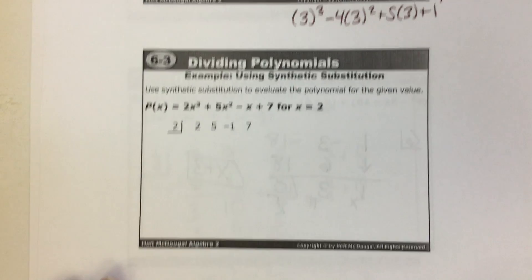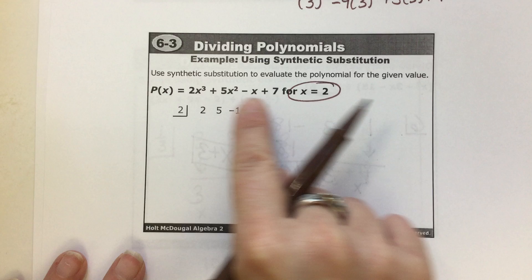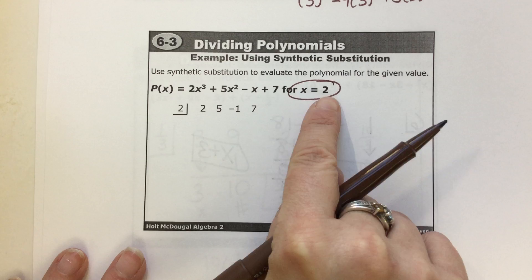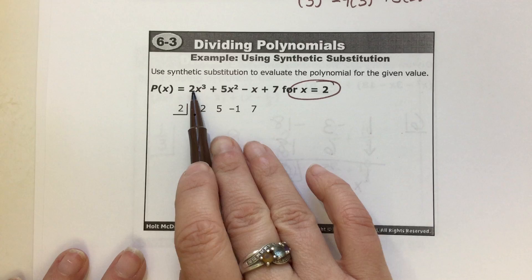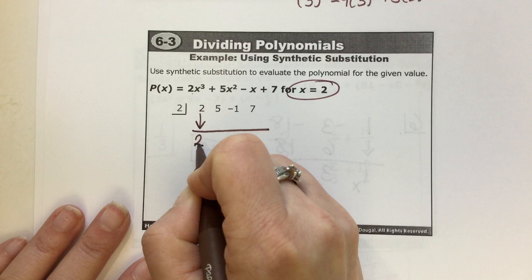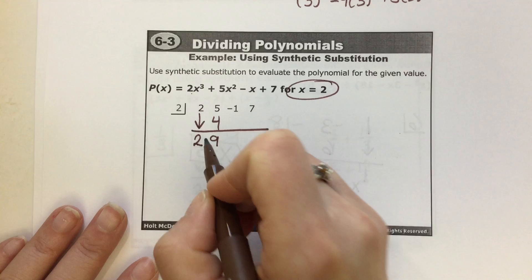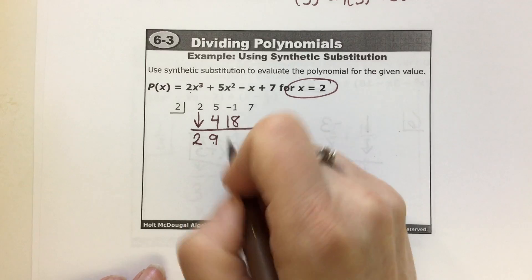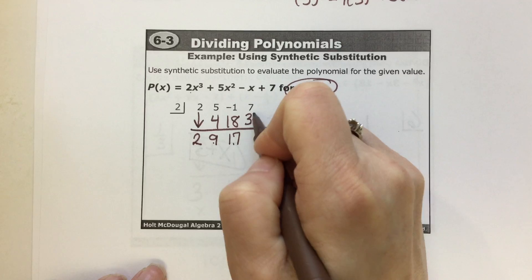We're going to do a couple. If you want to evaluate the polynomial for x equals 2, put 2 in the box for synthetic division. The coefficients are 2, 5, negative 1, 7. Bring down the 2. 2 times 2 is 4. 5 plus 4 is 9. 9 times 2 is 18. 18 plus negative 1 is 17. 17 times 2 is 34.